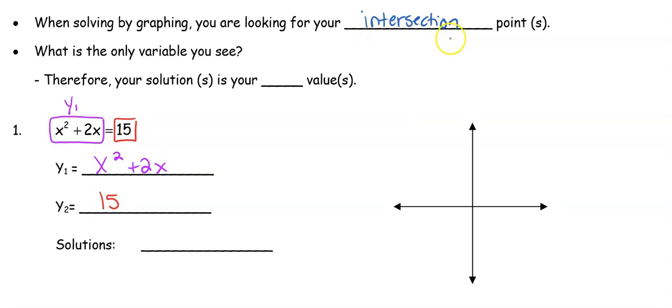We're going to look for the intersection point between those two pieces. Now when we're going to find our solutions, we look at the equation. The only variable that we see in that equation is the x value. So when you're solving, your solutions are x equals, not the coordinates of the points. The coordinates of the points are what we use to find what we're looking for.